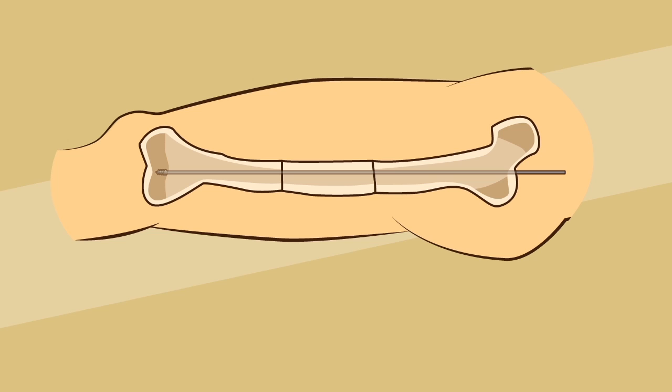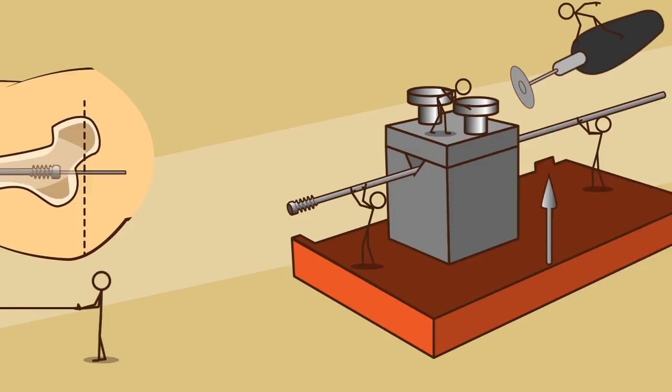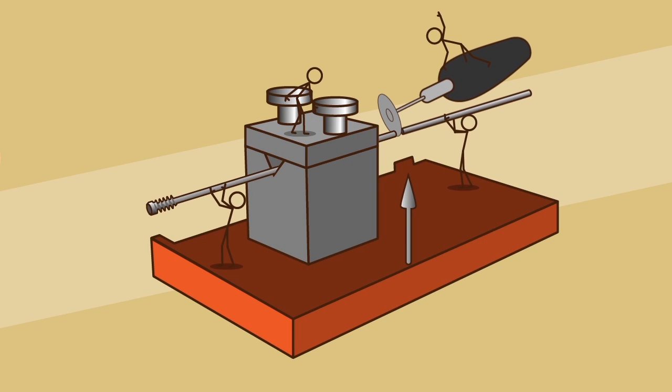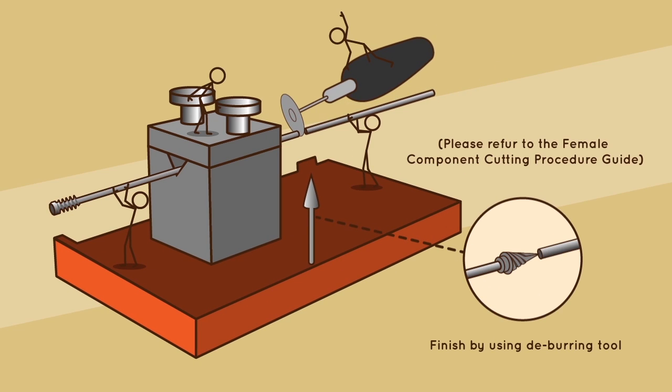Female cutting. The female component is now cut to the required size. The implant can be overlaid on the patient's leg to establish the required implant length. The female component is cut using the FC cutting jig and diamond cutting disc mounted on a high-speed rotary tool. After cutting, a deburring tool is used to clean the inside lumen.